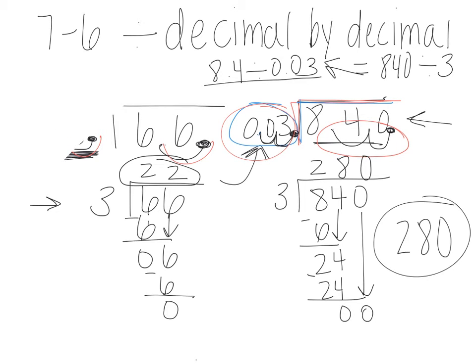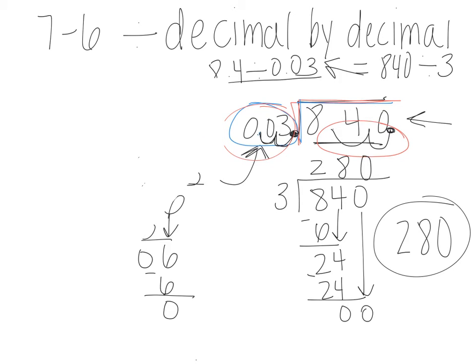So hopefully this is making sense to you. Basically the two steps that we need to take are moving our decimal point to the divisor as many times as we need to to get a whole number and then step two is divide your whole numbers like normal using long division.